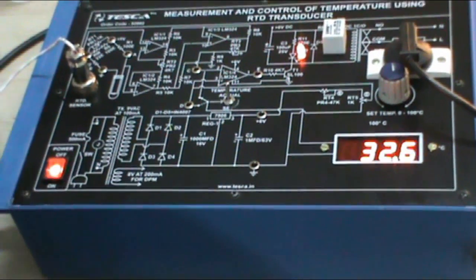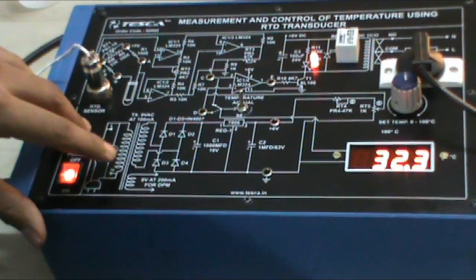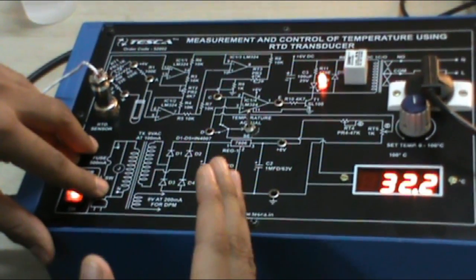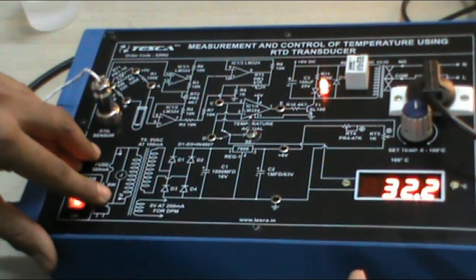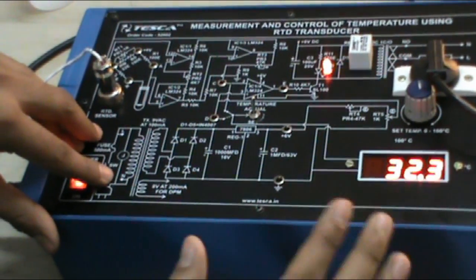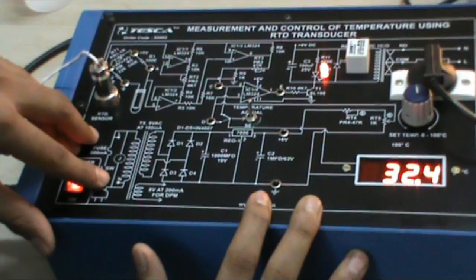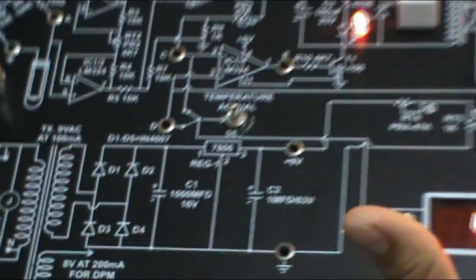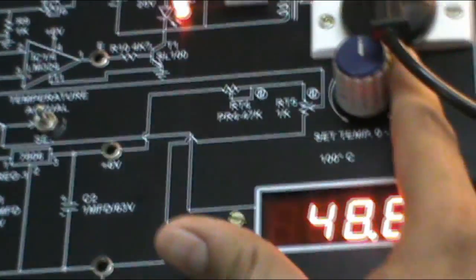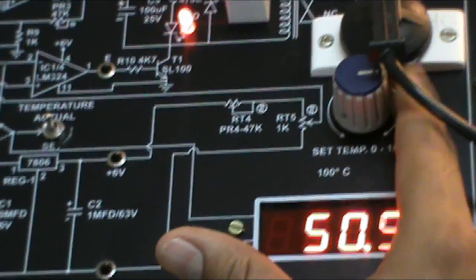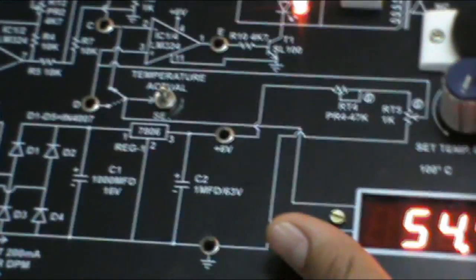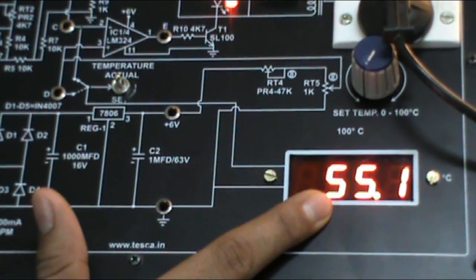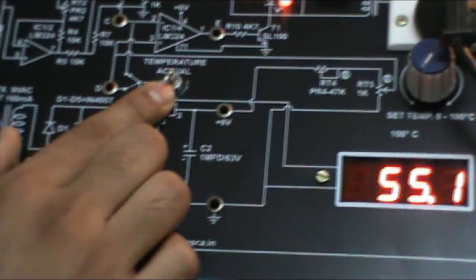Now, in order to see that whether we can set a temperature, and at that particular temperature, if the temperature rises above that set temperature, the light of the lamp will automatically switch to off. Now for this, turn this mode to set mode and set the temperature through this knob. We set the temperature to around 55 degrees Celsius and again set this knob to actual mode.